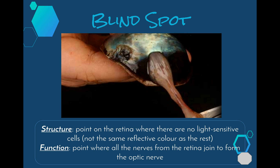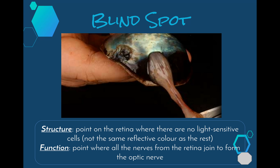The blind spot is the point on the retina where the optic nerve leaves the eye. There are no light-sensitive cells there — no rods or cones — so we can't actually see anything at this point, and it doesn't have the same reflective color as the rest of the retina. When we do our eye dissection and cut the eyeball in half, you can automatically see where the blind spot is because it looks completely different to the surrounding surface. This is where all the nerves from the retina join together to form the optic nerve and head out the back of the eyeball to the brain.